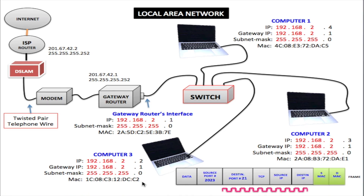Now, every time you send data from one computer to another, you send a frame. This frame consists of data, and this data comes from the application, presentation and session layers of the OSI model. The source port number comes from the transport layer, and so does the destination port number. The source port number is a randomly generated number from your workstation — for example, port number 42023. And the destination port, in this case, is port 21, which is an FTP server. So if this computer has an FTP server that the other computer is trying to access, port 21 would be the destination port.